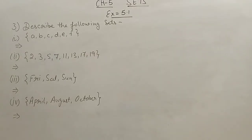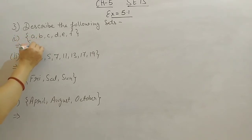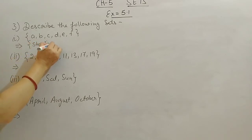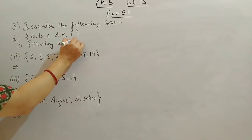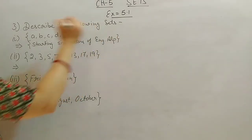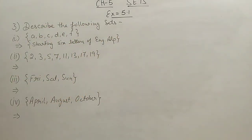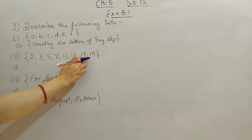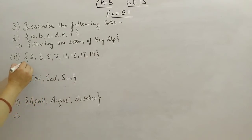Next, Question 3: Describe the following sets. First, {A, B, C, D, E, F} — these are the starting six letters of the English alphabet. So description: starting six letters of the English alphabet. Second, {2, 3, 5, 7, 11, 13, 17, 19} — if you observe carefully, these are prime numbers, and up to 19 means less than 20. So description: prime numbers less than 20.